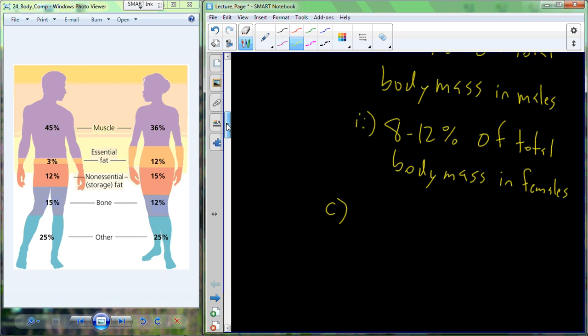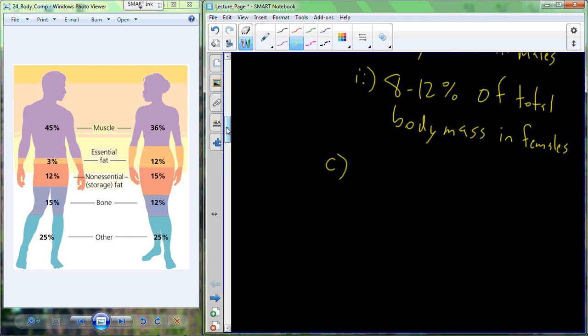On the converse, the non-essential fat is what we call adipose tissue. Essential fat is typically associated with organs and helps those organs to be able to function. Whereas the non-essential fat is stored up in this tissue called adipose tissue. And so these are going to be areas where we have accumulation of fat, fat cells, adipose cells, making up this adipose tissue.